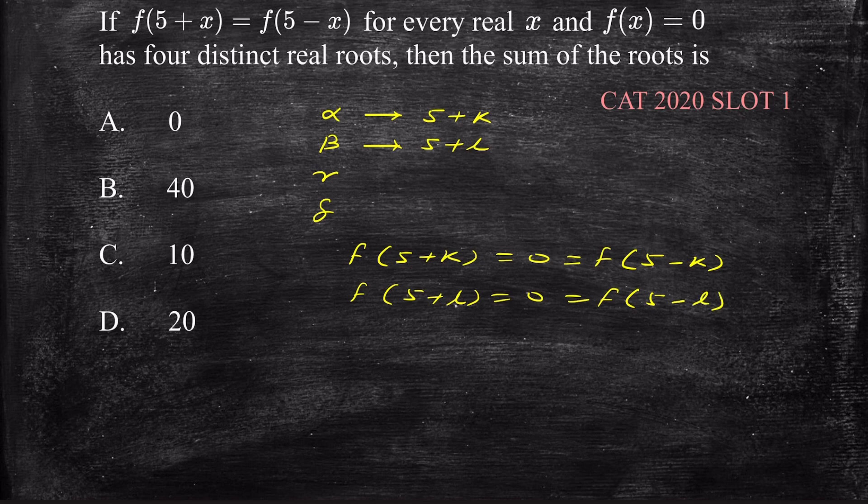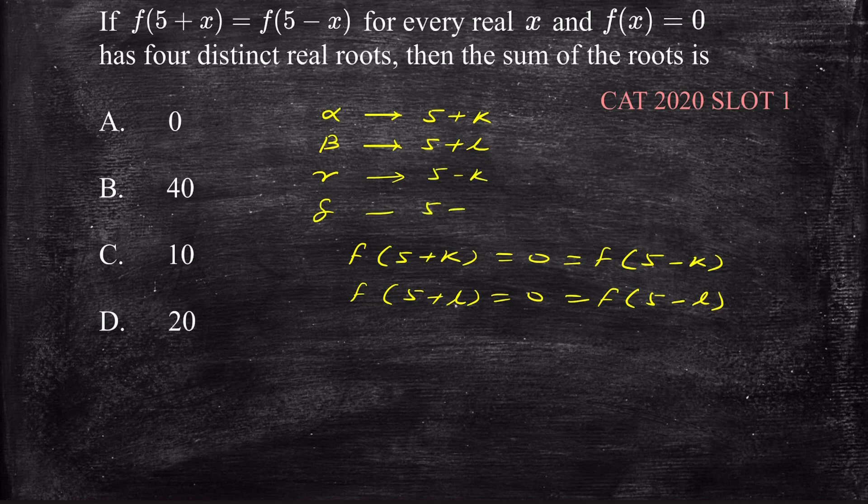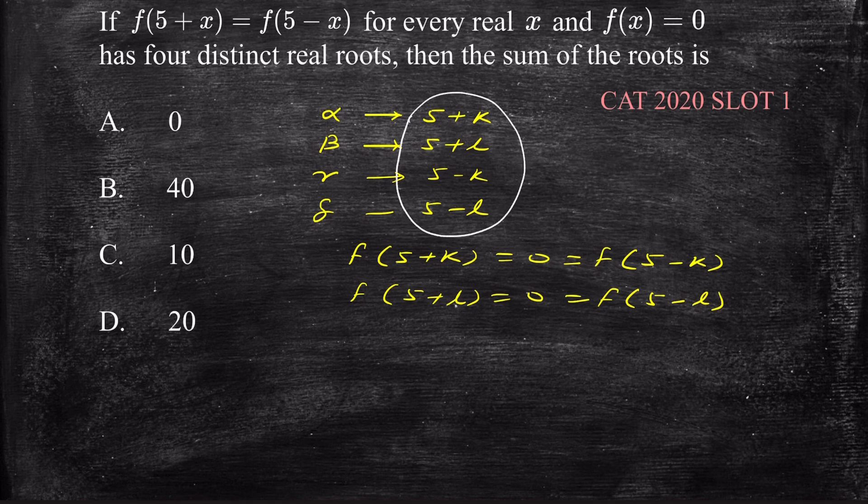So we can easily conclude that if two roots of this equation are 5 plus K and 5 plus L, then the other two roots should be equal to 5 minus K and 5 minus L.